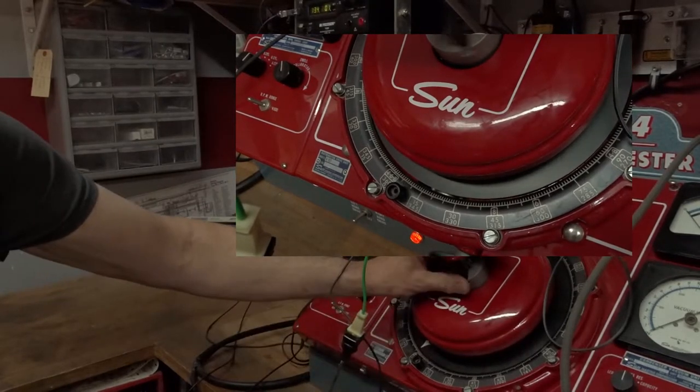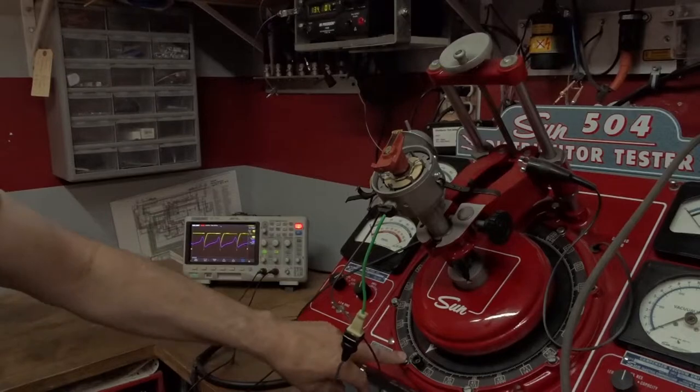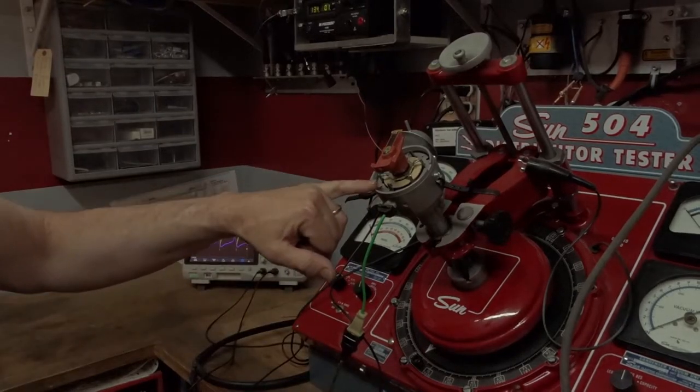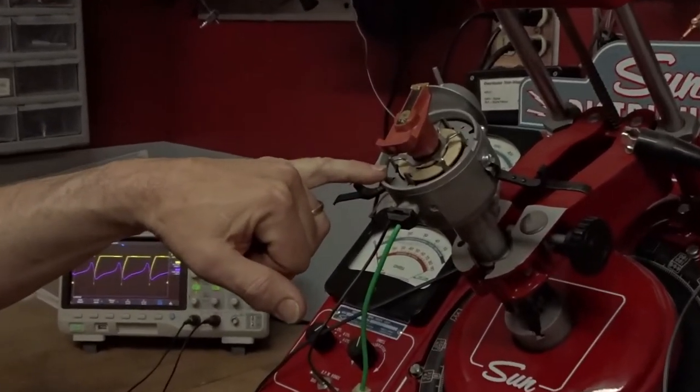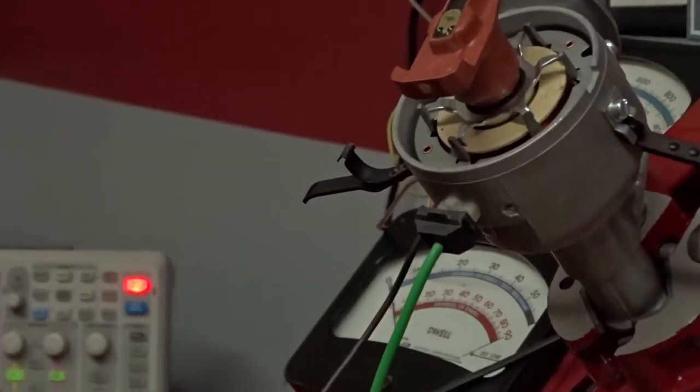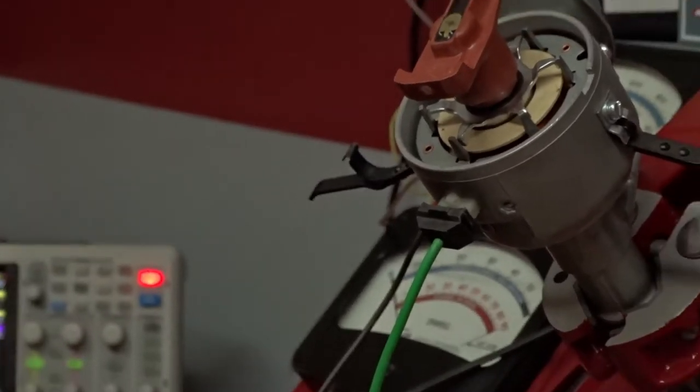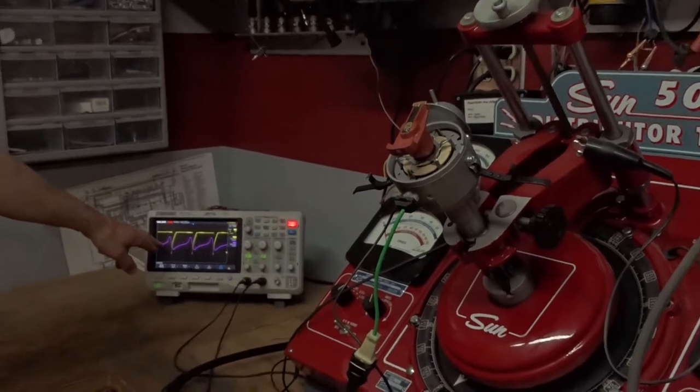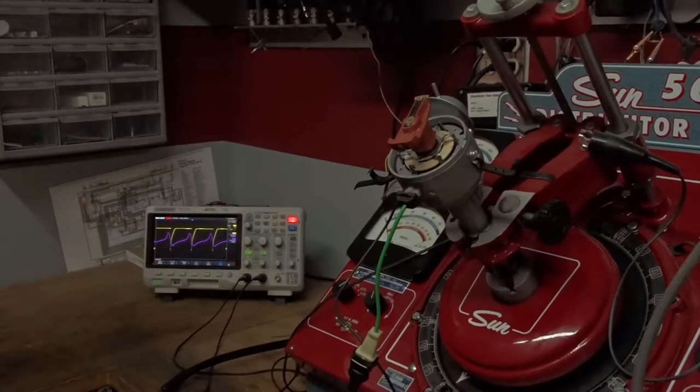And if we bring our arrow up, we'll see if we look in closely at the distributor that our reluctor and stator arms are very close together. On our scope, the yellow line is the capacitor discharge and the pink line is our trigger signal.